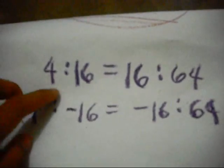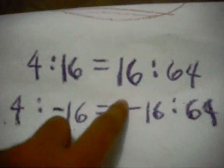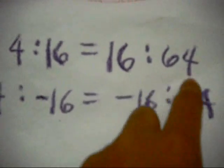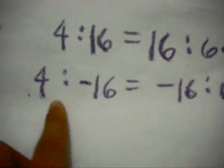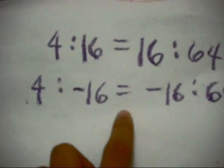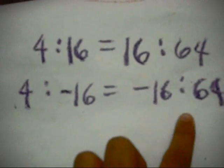Therefore, 4 is to 16 is equal to 16 is to 64. And 4 is to negative 16 is equal to negative 16 is to 64.